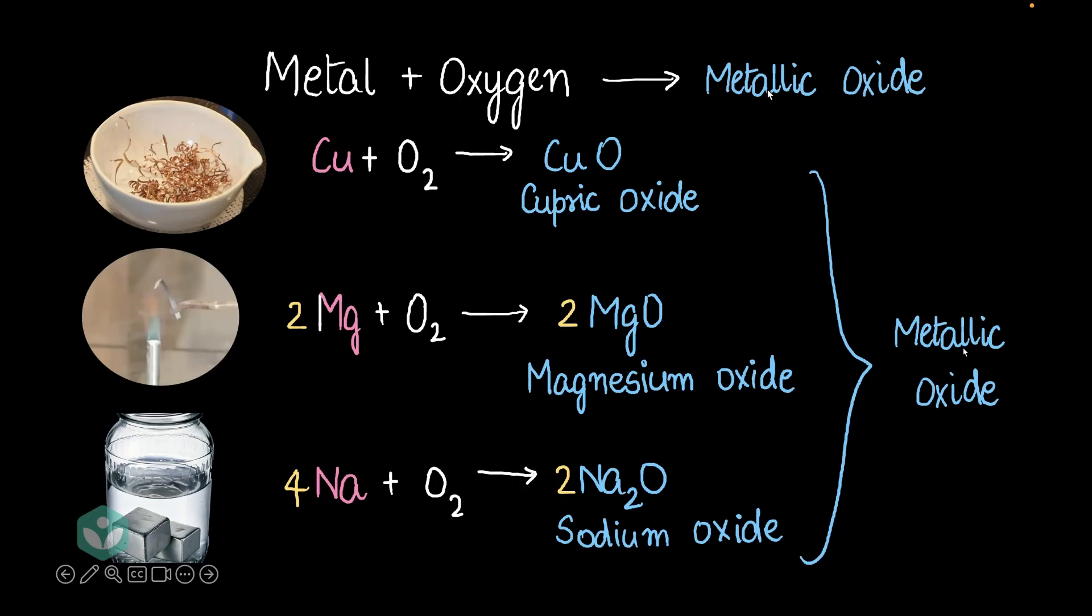Now, the question is, does this happen with every single metal on the planet? Well, no. Metals like gold, silver, platinum, right? The expensive stuff, those are non-reactive. They do not react with oxygen to give a metallic oxide. But most other metals that you see around you will react with oxygen to give some kind of metallic oxide.